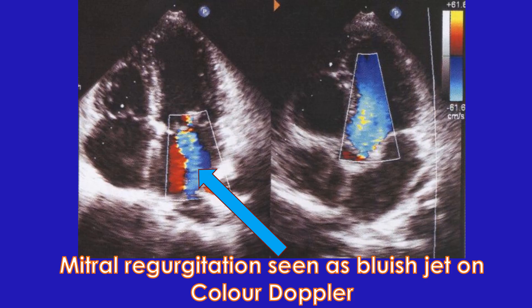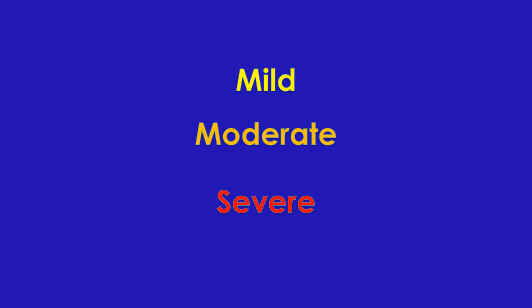Valvular abnormalities could be regurgitation or stenosis or a combination of the two. Structural abnormalities like a cleft anterior mitral leaflet in endocardial cushion defect may also be present. Thickening, calcification, abnormal motion, perforation and vegetation if any on the valve leaflets will be mentioned. In case of mitral stenosis, subvalvar fibrosis is mentioned as subvalvar pathology. Stenosis can be graded as mild, moderate and severe depending on severity.